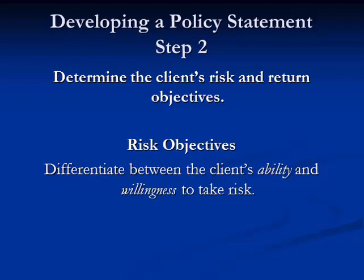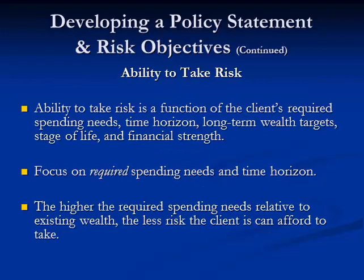Step two: determine the client's risk and return objectives. You need to differentiate between the ability and willingness to take risk. The ability to take risk is a function of the client's required spending needs, time horizon, long-term wealth targets, stage of life, and financial strength. Required spending needs refers to how much money an individual needs to live off when they retire.